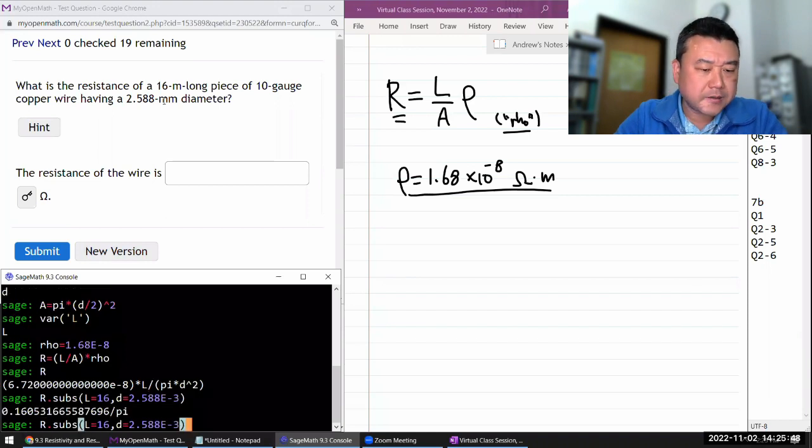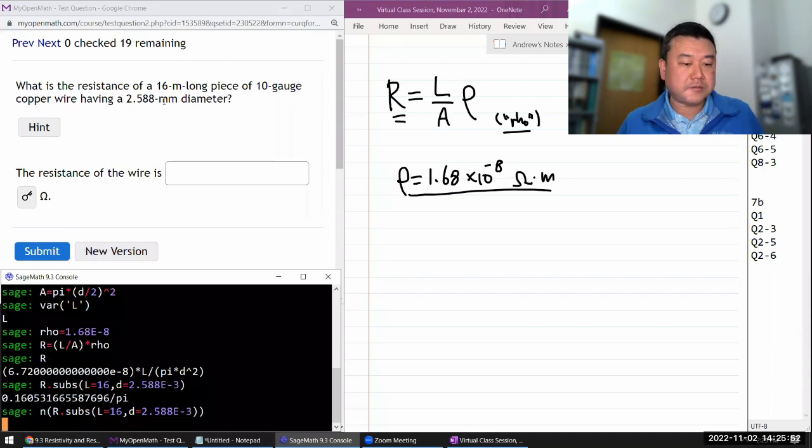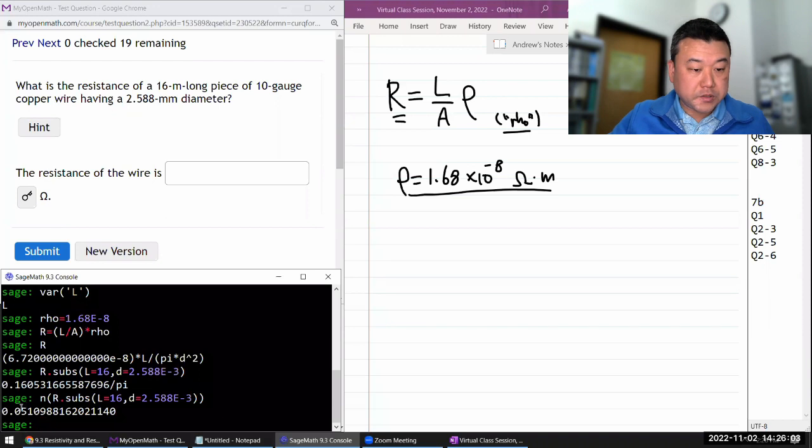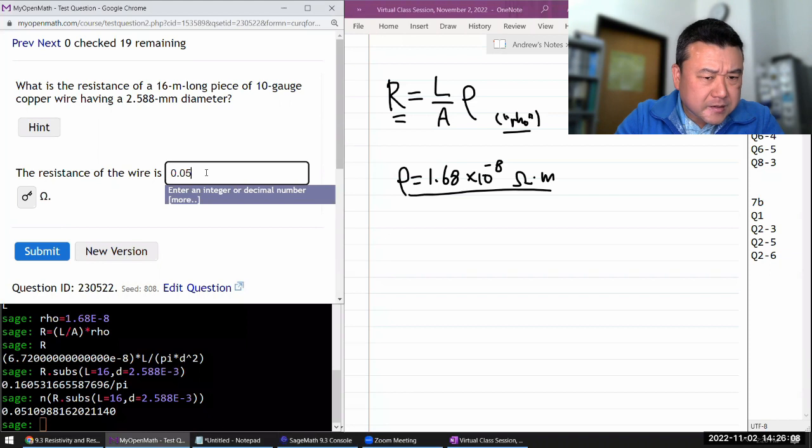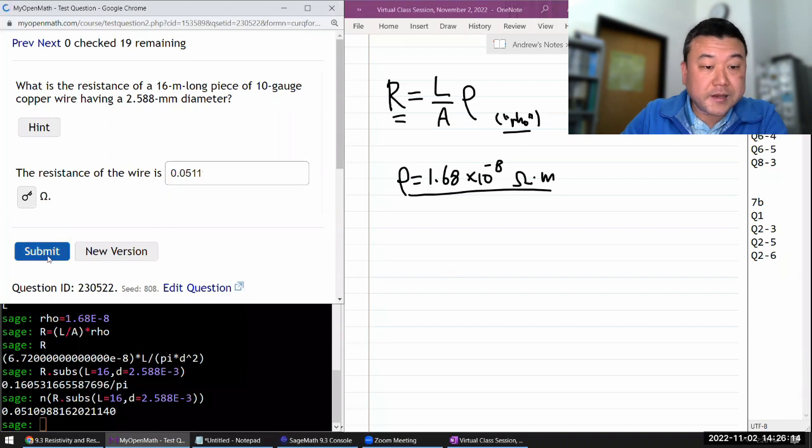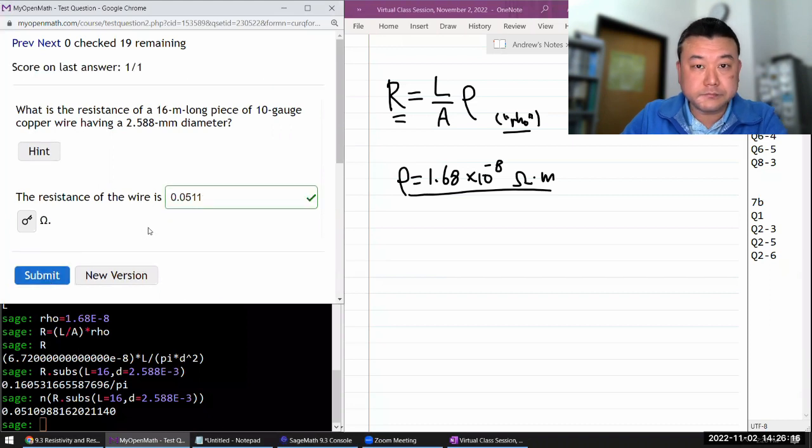Take the total numbers. Let me see if it keeps the pi. So I'm going to have to pass it through the decimal approximation function. It gives me 0.0511 ohm. It's pretty small. And I guess that makes sense. Copper is pretty conductive. This sounds like a thick wire. And 16 meters is not that long. So good.